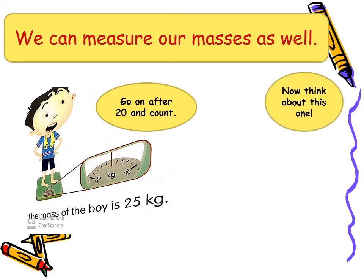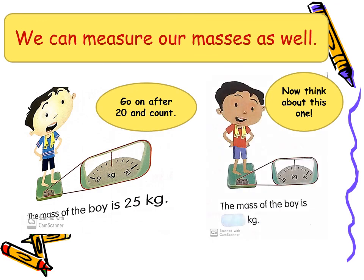Now think about this one. What is the mass of the boy in the next picture? Go on and count after 20, counting by 1: 20, 21, 22, 23, 24, 25, 26. So the mass of the boy in the second picture is 26 kg.